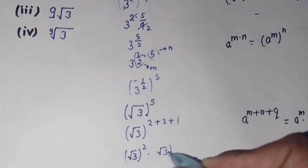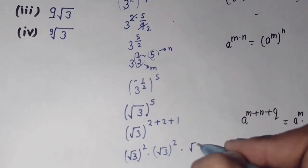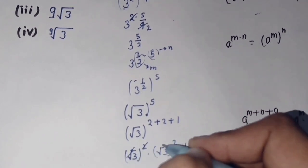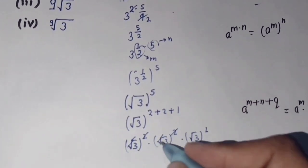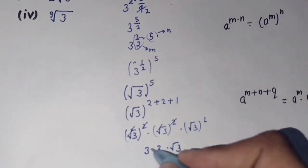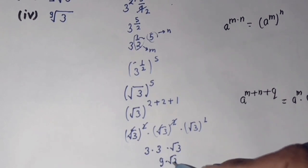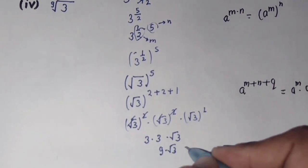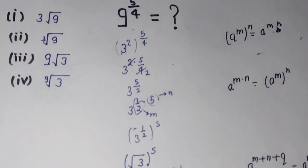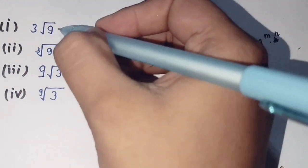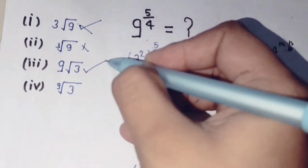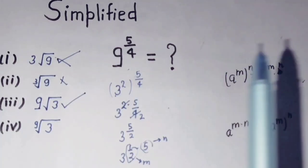Applying the formula: square root of 3 to the power 2, times square root of 3 to the power 2, times square root of 3 to the power 1. The square roots and the squares cancel, giving 3 times 3 times square root of 3. So 3 times 3 is 9, and the answer is 9 times square root of 3, which equals 9 root 3. The correct option is 3. I hope you enjoyed this video.